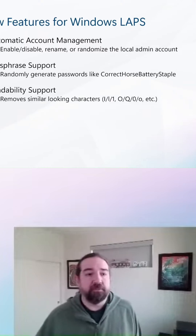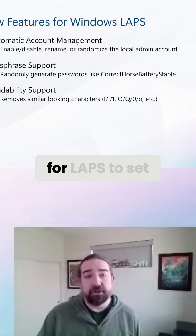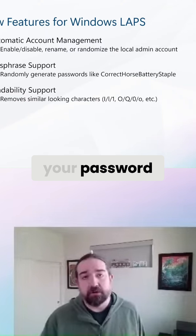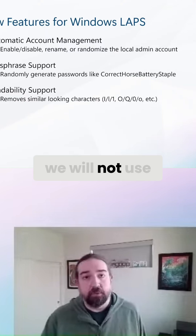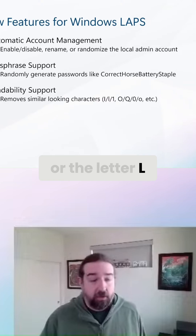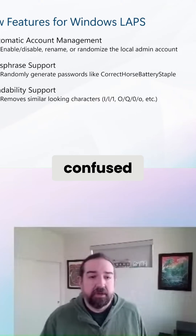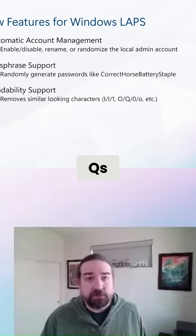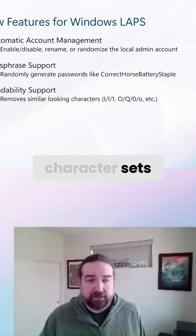Next, we've implemented readability support. This removes the ability for LAPS to set similar-looking characters in your password. For example, if you have readability support turned on, we will not use the number one, the letter L, or a capital I, which are all very commonly confused. Additionally, we won't use O's, Q's, and 0's, and other similar-looking character sets.